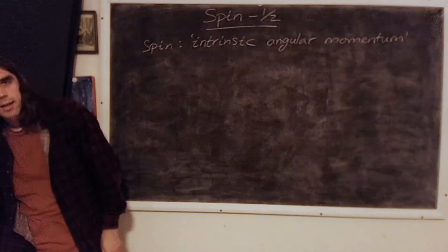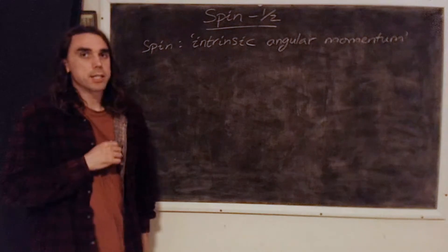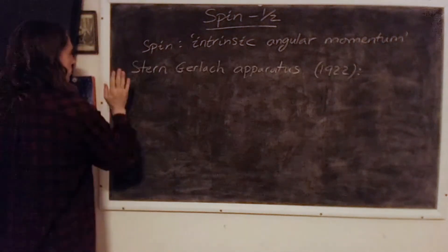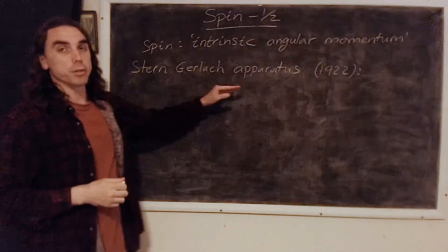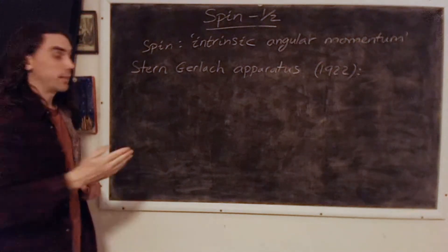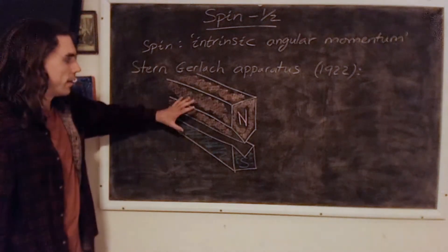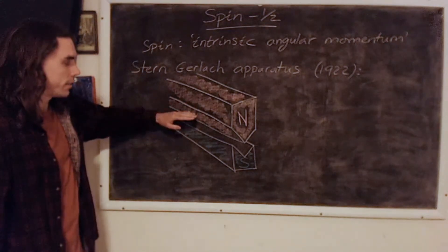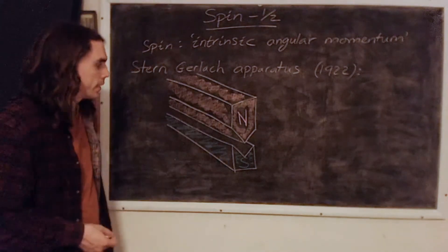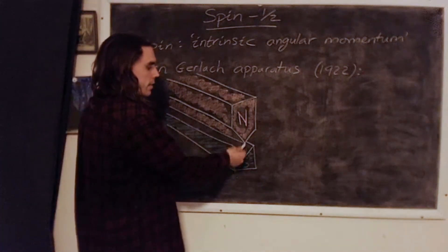So we can identify properties of the spin of an electron using what's called a Stern-Gerlach apparatus. So there's an experiment that was carried out in 1922 originally, I believe, and it looks something like this. That is a large magnet. We've got the north pole up here and the south pole up here.